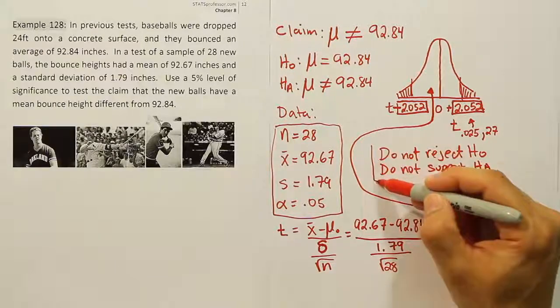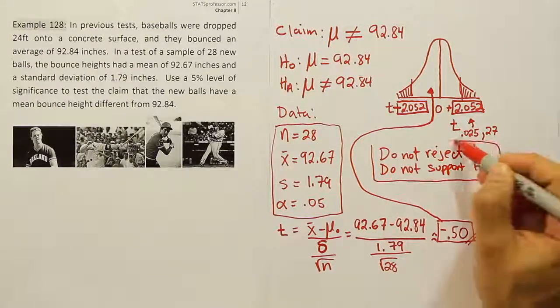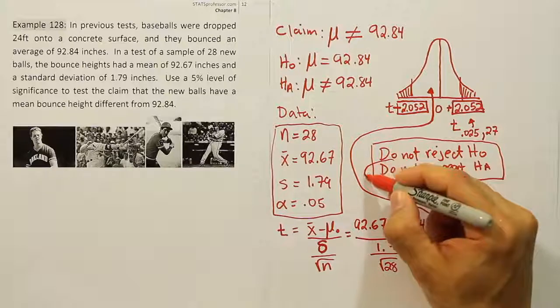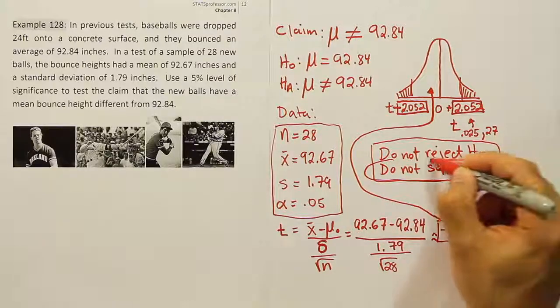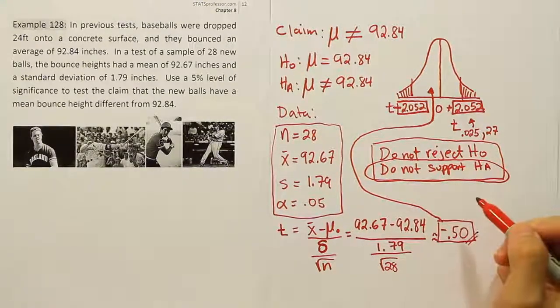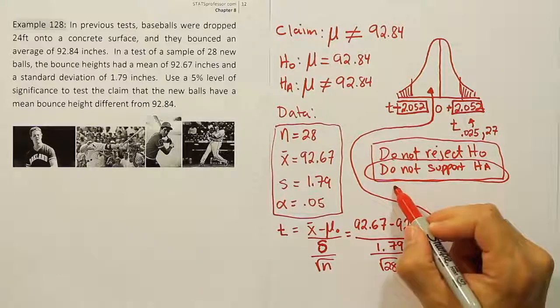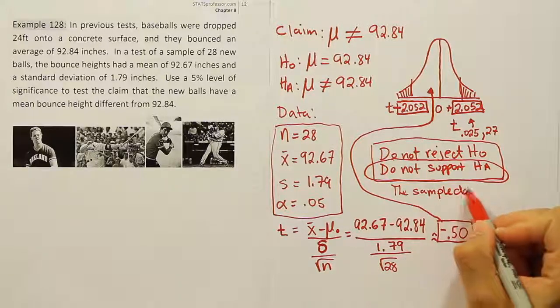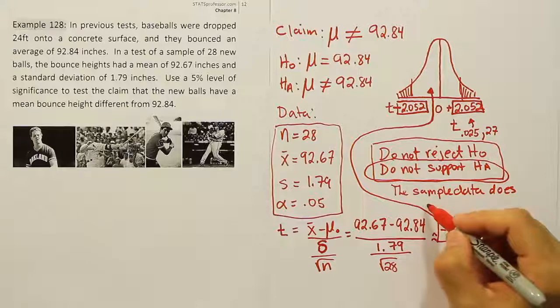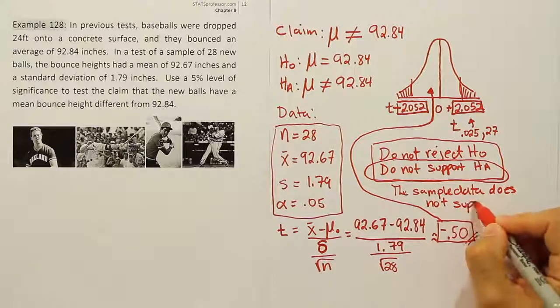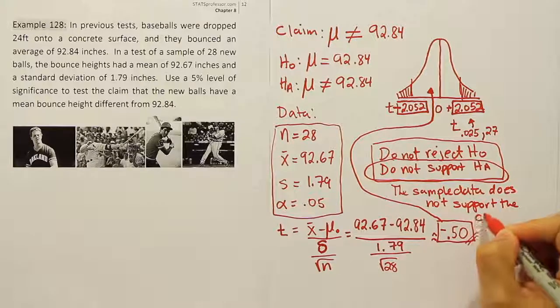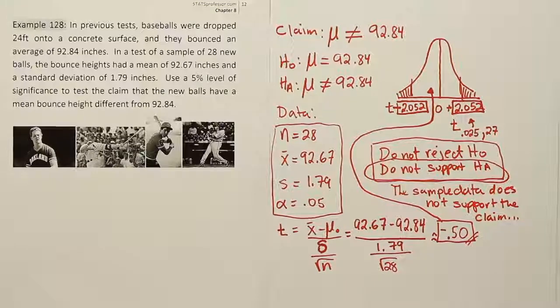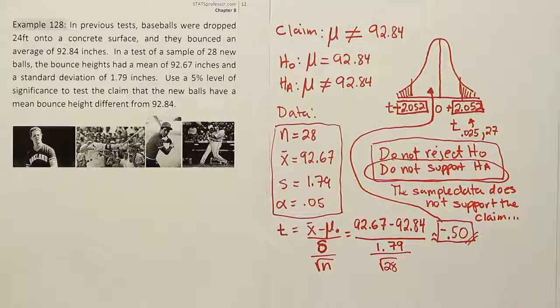Once we have that identified, the last step is just to say, which was the claim? Was it H₀ or H_A? The claim was H_A here, so we're going to say this: the sample data does not support the claim. So this claim that the baseballs bounce further, it just doesn't seem to be correct. So there must be another explanation for the spree of home runs by these two athletes.